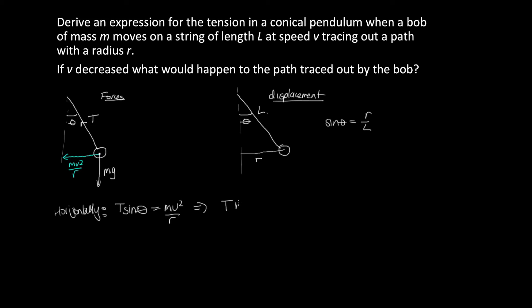So we've got that T times r over l is equal to mv squared on r, which tells us that T is equal to mv squared over r squared and then we've got an l up here.